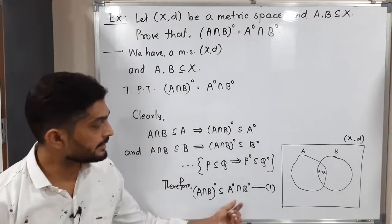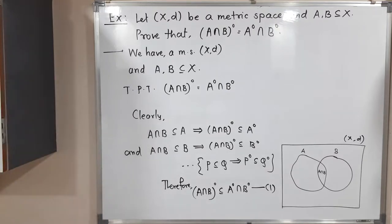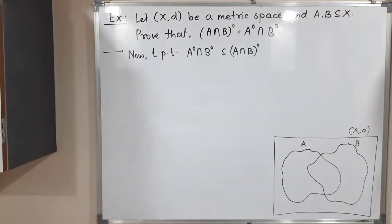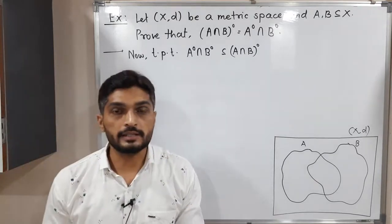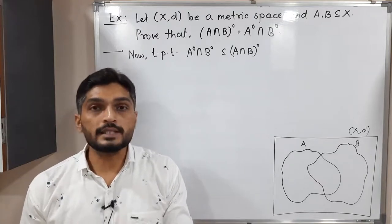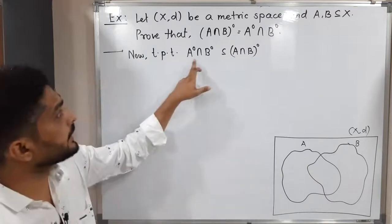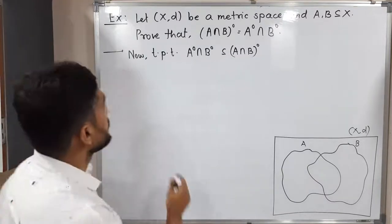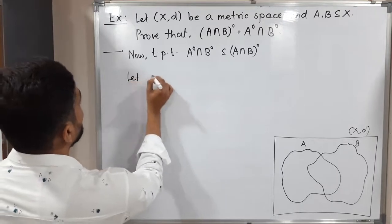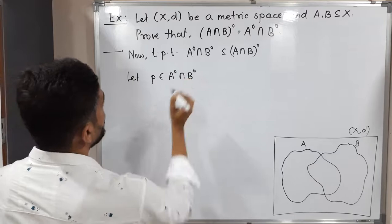Now we have to prove the other direction: that the interior of A intersection the interior of B is a subset of the interior of A intersection B. To prove one set is a subset of another, we use a simple technique: we take any arbitrary element from the first set and prove it belongs to the second set. So let us take one element.